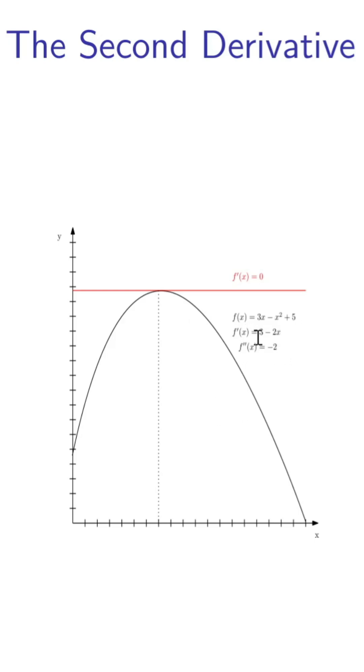We take the first derivative, which in this case is 3 minus 2x. The 5 drops out, and then we take the second derivative, which is minus 2. So it's always negative.